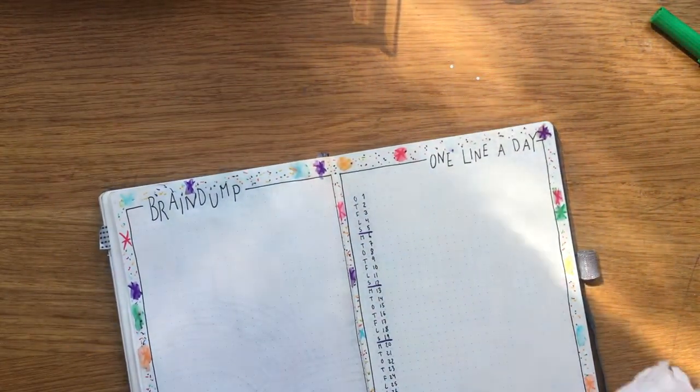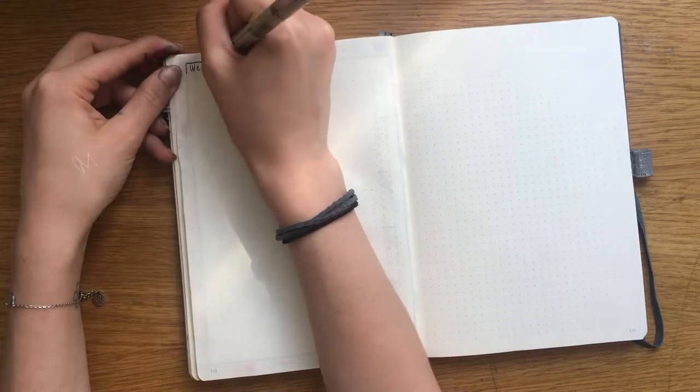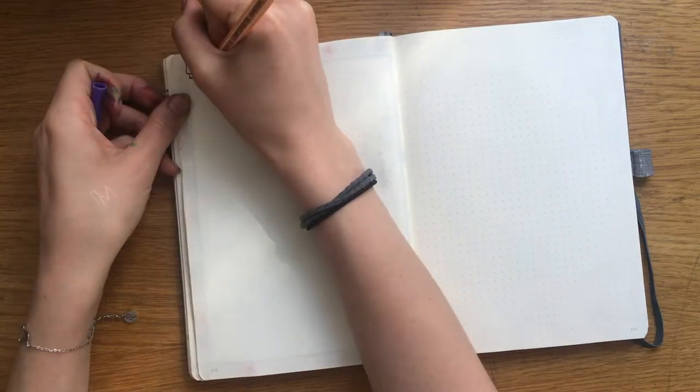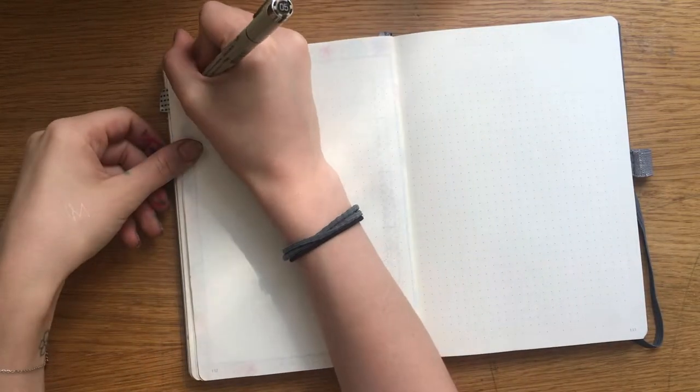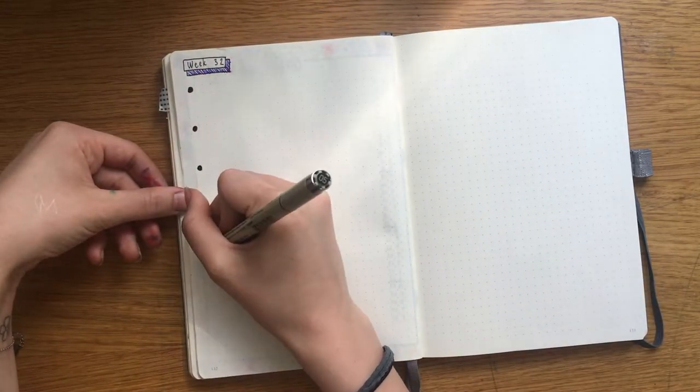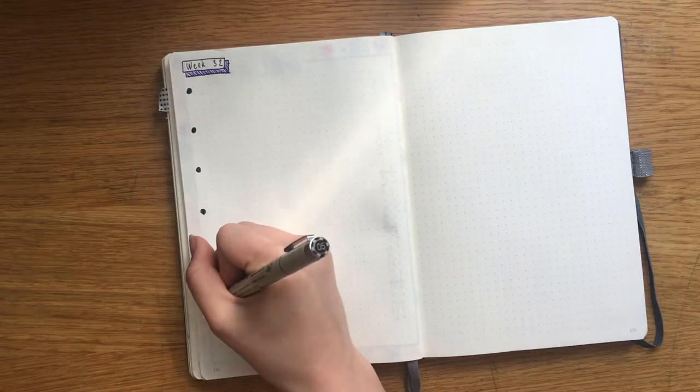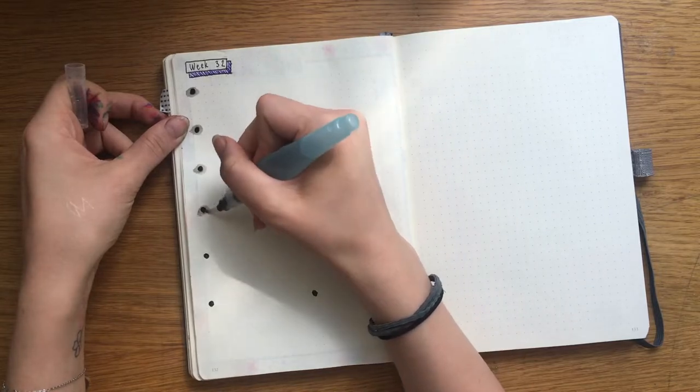On to my first weekly spread. I didn't really know what to do here either so I made one black blob for each day of the week and then I watered it out and then my plan was to write the numbers of the days in white. But we'll see later that didn't really work out.